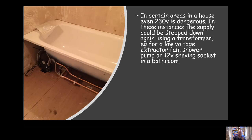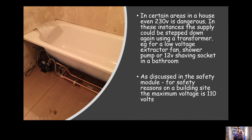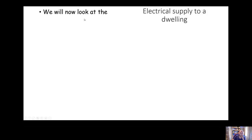In some areas of the house, 230 volts is considered dangerous, so the supply is stepped down using a transformer. For example, an extractor fan right next to a bath should be extra low voltage. Shaving sockets in bathrooms are also ultra low voltage, to minimise the risk of electrocution. On a building site, the maximum voltage is 110 volts.